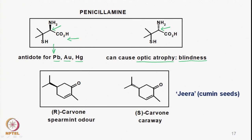If one takes a racemic drug, obviously 50% of it is the non-useful form. Similarly, with carvone, which has one asymmetric center: R-carvone has a spearmint odour, a particular mint-type odour, whereas S-carvone has a cumin seed — called jeera in Hindi — or caraway type of flavour. So the flavour or odour becomes different for the two enantiomers, and in order to have a proper odour, we have to take only one enantiomer.